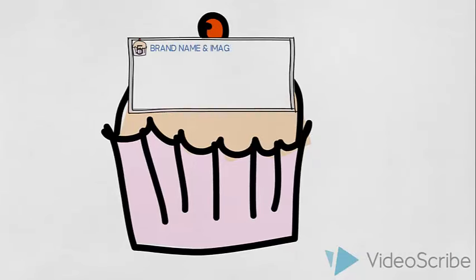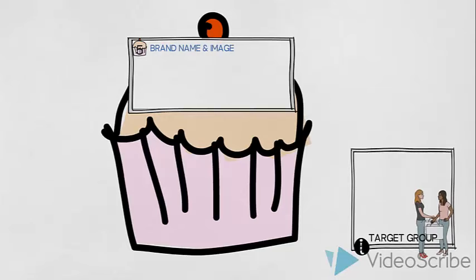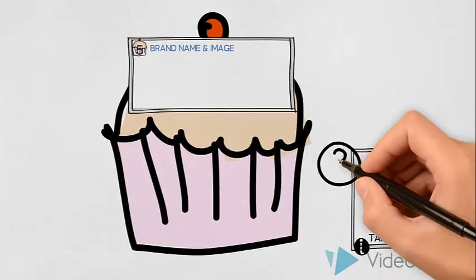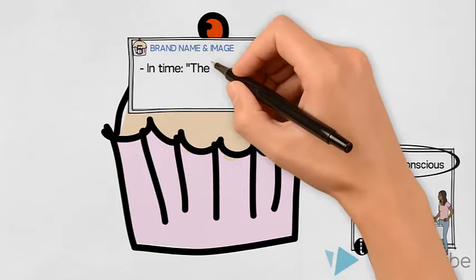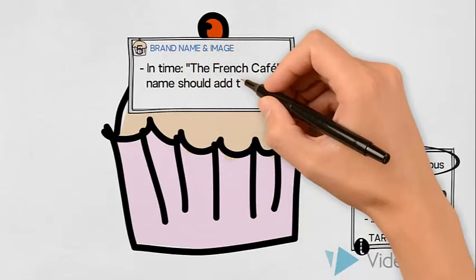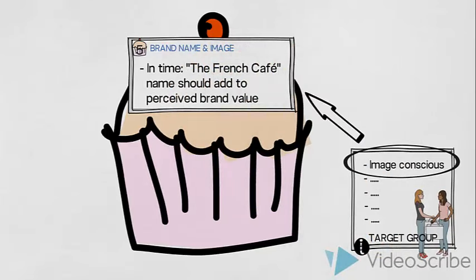Brand name and image. In time, our brand name, the French Cafe, will also add to the perceived value of our cakes and desserts and therefore our desired brand image. And this will, of course, appeal to our target group's desire of maintaining their own image. However, this will not happen instantly. This is something that will develop over time.